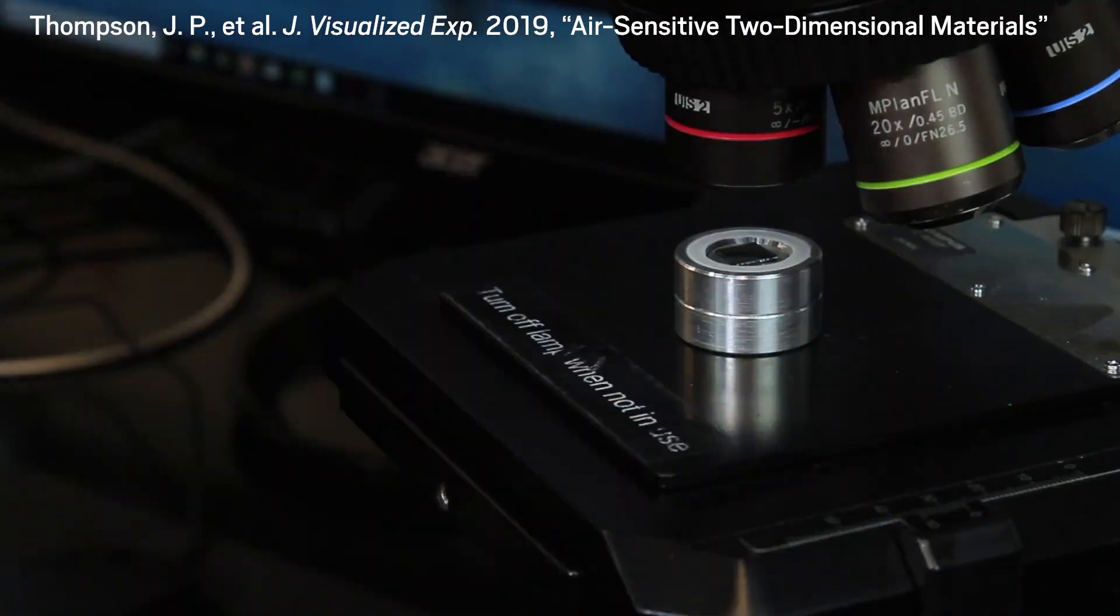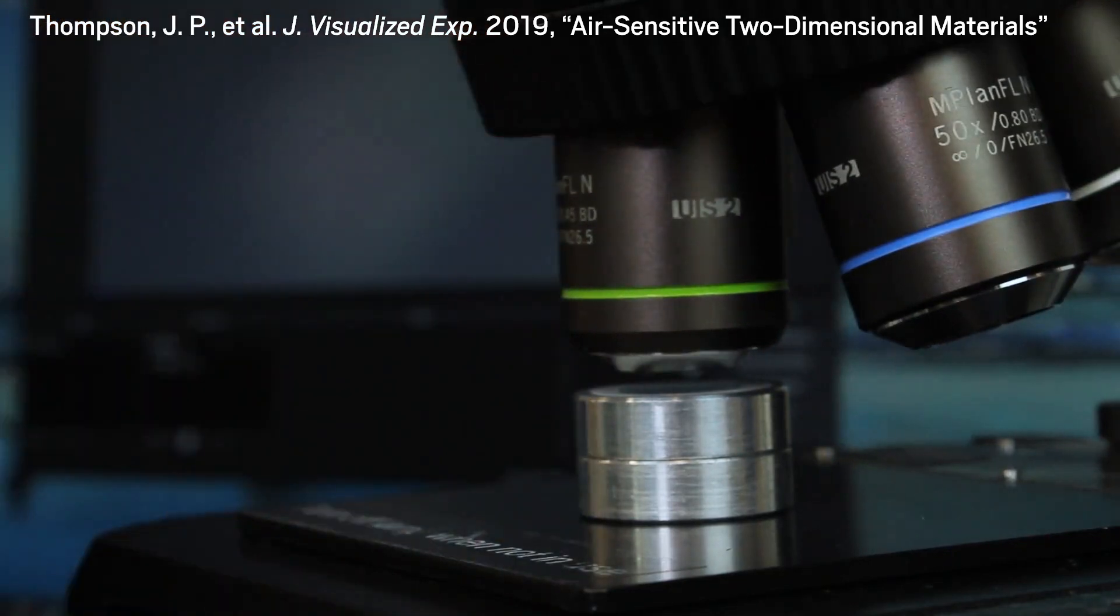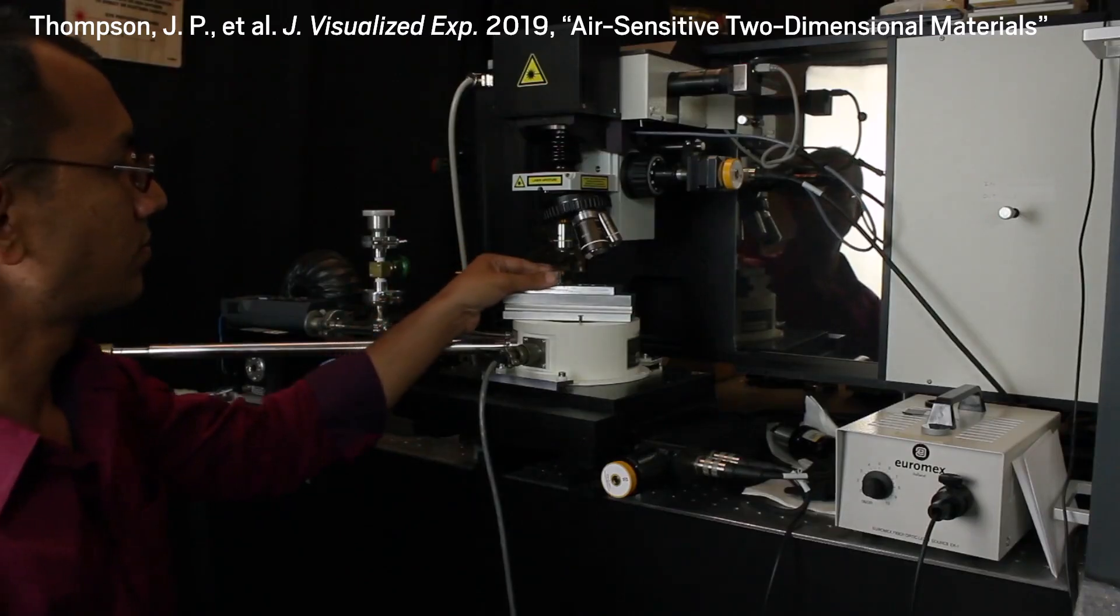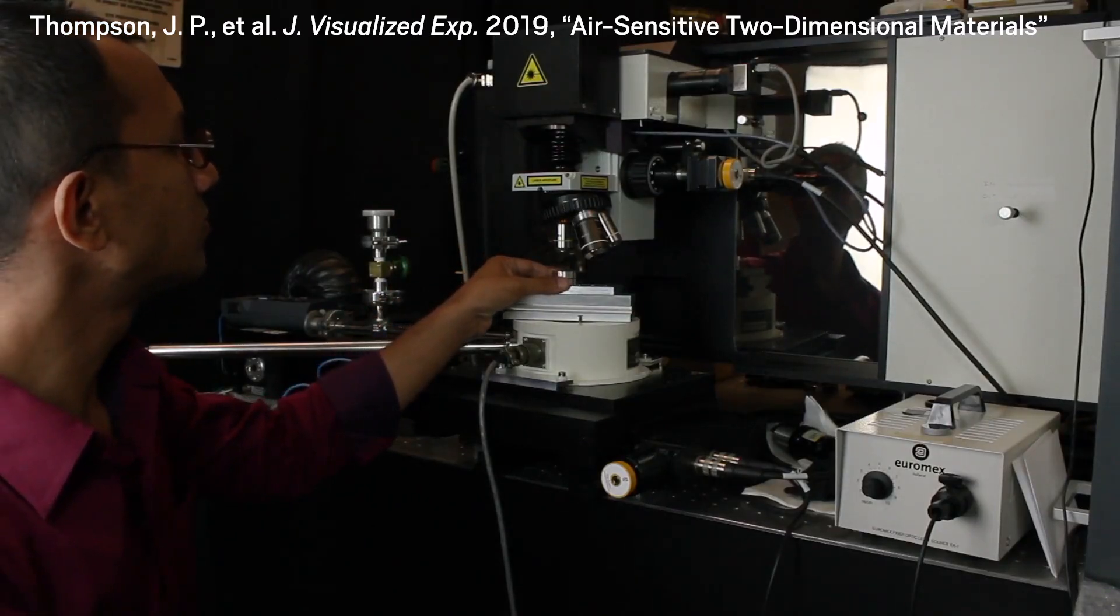With this combined method, the Arkansas group was able to get larger flakes and more of them, 6 to 10 times more material than usual, and they were able to image the flakes with optical microscopy and polarized Raman spectroscopy without the flakes degrading.